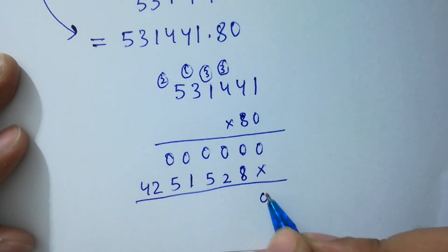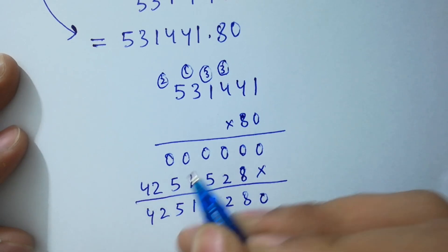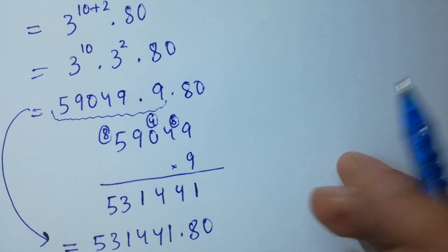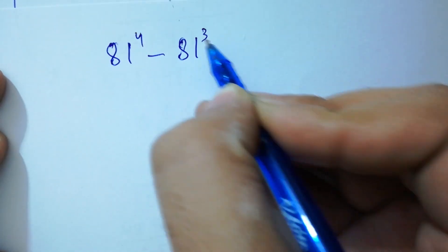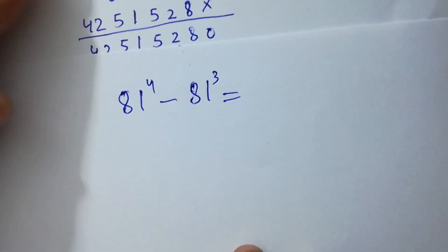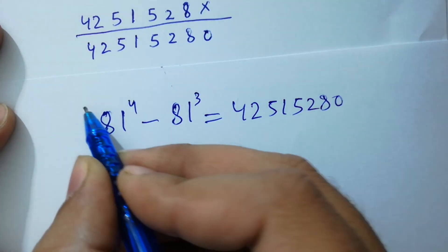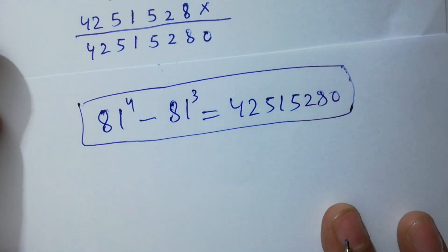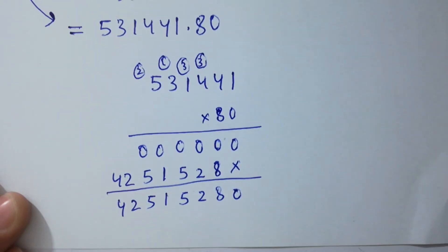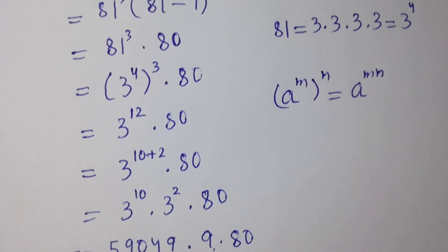So finally, 81 to the power 4 minus 81 to the power 3 equals 42,515,280, which is our final answer without using any calculator. Thanks for watching this video. Please subscribe to this channel to get notifications of my new videos, and don't forget to share these videos with your classmates and friends so they can also benefit from it.